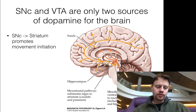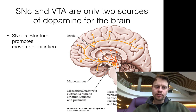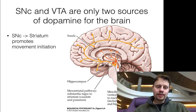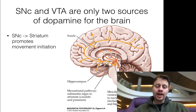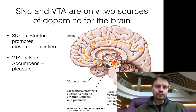In the context of Tourette's syndrome, we've talked about how the substantia nigra pars compacta — dopamine from there — those axons go to the striatum, and dopamine released from there to the striatum promotes the initiation of movement.